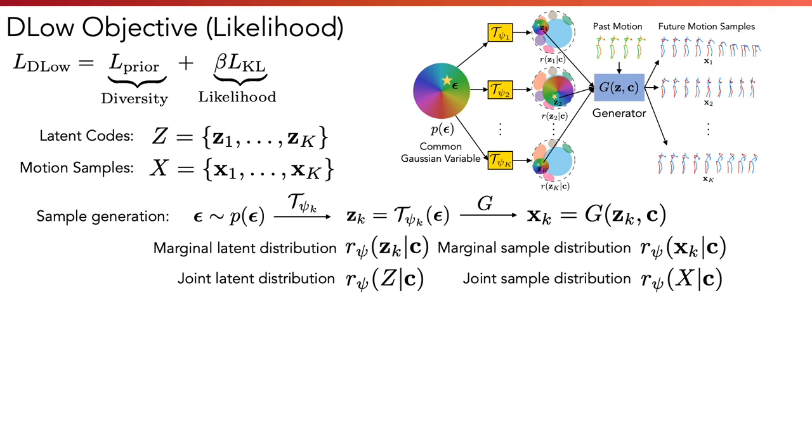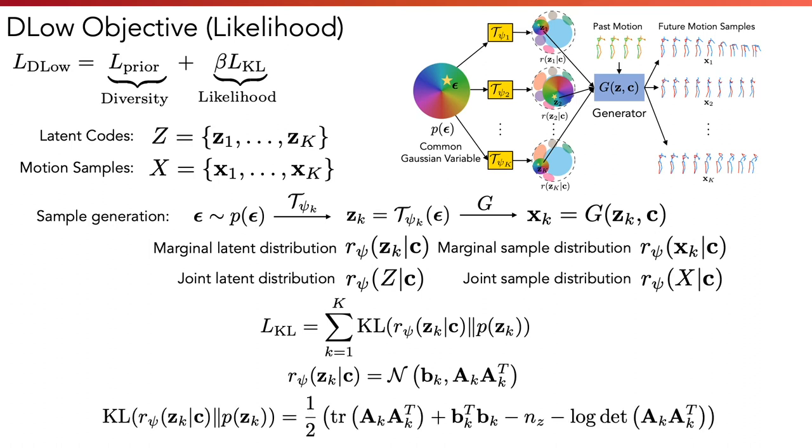It is defined as the KL divergence between the marginal latent distribution and the Gaussian latent prior. A good thing about the affine transformations is that the latent codes after the transformations are still Gaussians, which leads to a closed-form solution of the KL divergence and eliminates the need for Monte Carlo estimates, which have high variance.